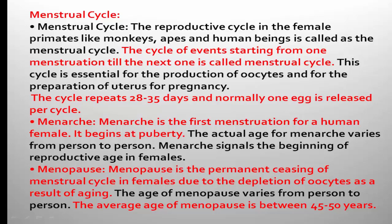During the menstrual cycle, two types of changes take place: one inside the ovary and another within the uterus. Cyclic events occur both within the ovary and within the uterus. This cycle is repeated on an average of 28 to 35 days, and normally one egg is released per cycle.